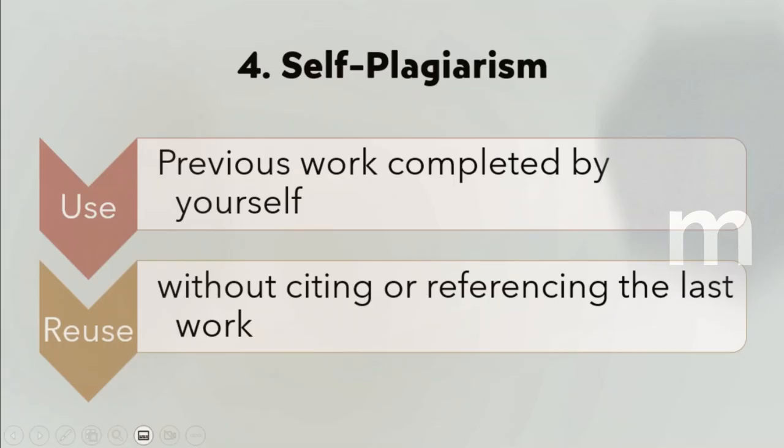Self-plagiarism is another common type of plagiarism. This happens when students use a previous work written by themselves, yet they submit it for another assignment. Let's say that in the past, you have written a paper about the importance of preserving the natural environment, and for another class, you are assigned a similar or sometimes even exactly the same topic. Therefore, you believe that you can use the exact same paper you already wrote, and it is perfectly fine just because it was you who wrote it. Unfortunately, you are wrong. This type of action is also considered plagiarism, as you are self-plagiarizing.